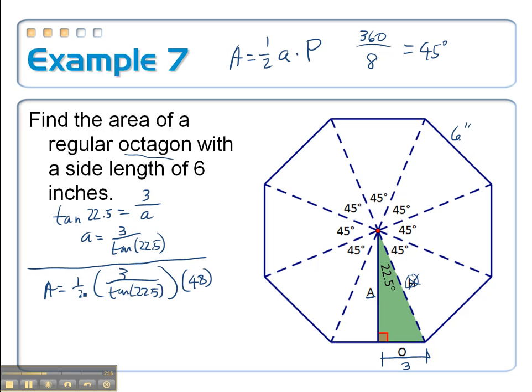Now I simplify. Take half of this 48 and get 24. Multiply the 24 times 3. That's 72 over tangent 22.5. There's the exact answer.